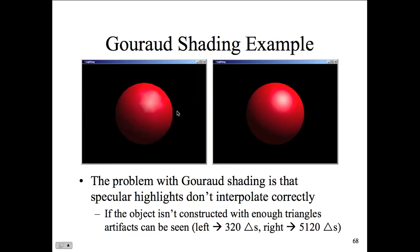Here's an example — it's a little lighter here and goes progressively darker. The screen doesn't do great with contrast, but it gradually goes darker to black at the bottom. The problem with Gouraud shading is that specular highlights don't interpolate correctly. If the object isn't constructed with enough triangles, you can get artifacts — quick drop-offs. Most things won't necessarily render correctly depending on what we're looking at.